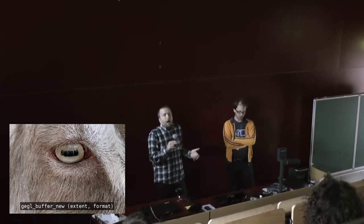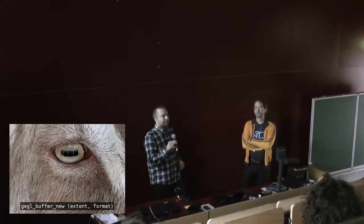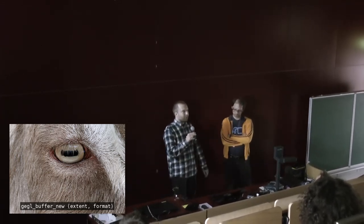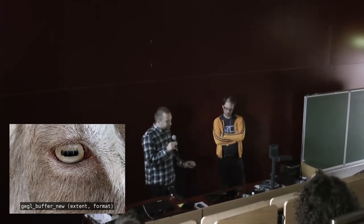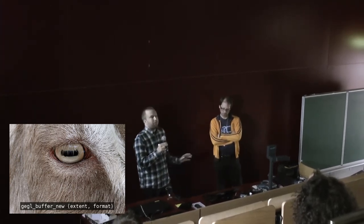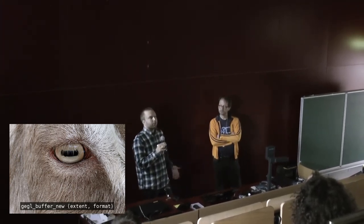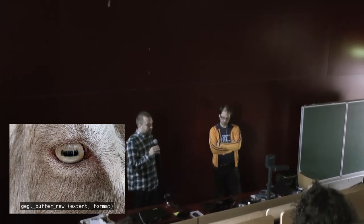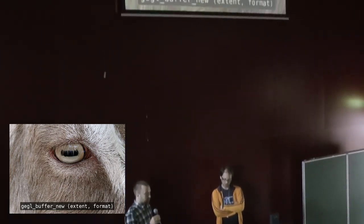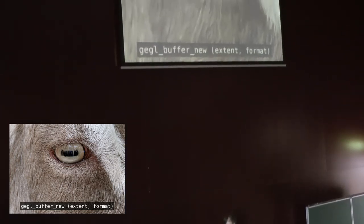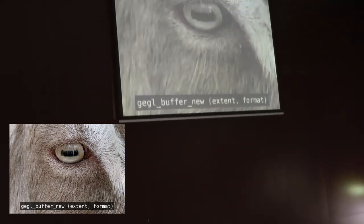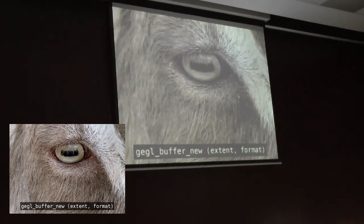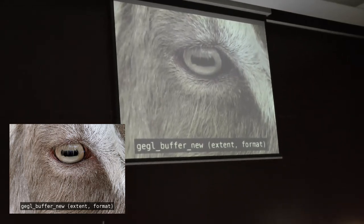I'm going to show some quite technical things, but I'm going to gloss over them and not talk through all the small pieces of code. The simplest thing for a GEGL buffer is to create a new one. This is a function which takes an extent — a rectangle specifying the size of the buffer — and it takes a format.